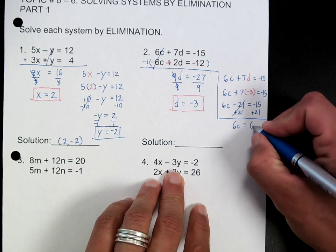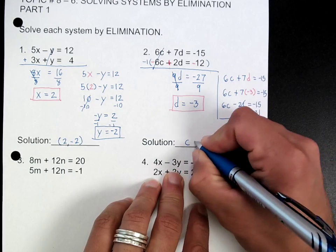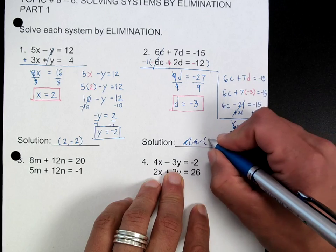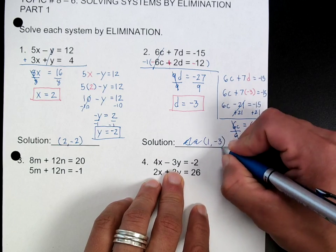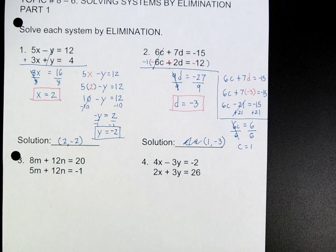Divide that by 6, so c is 1. My answer is 1 and negative 3. Does that make sense?